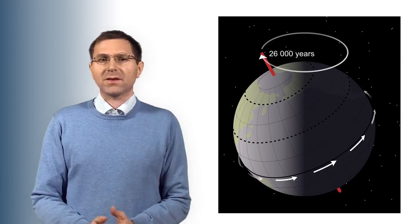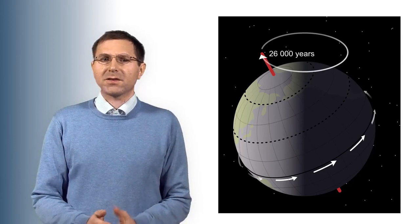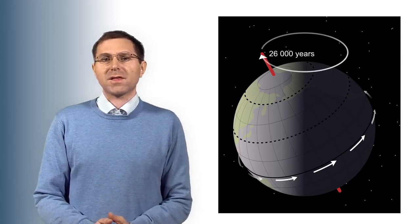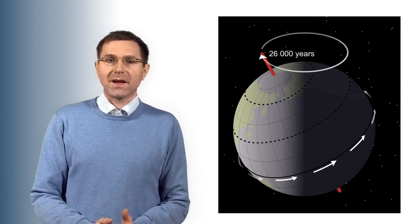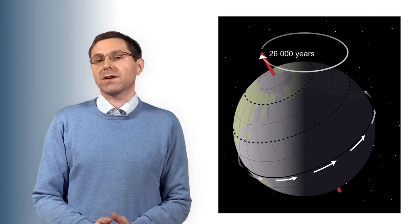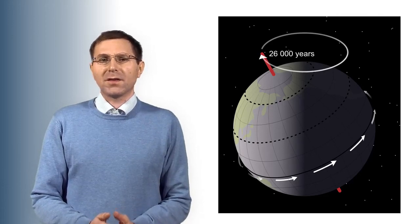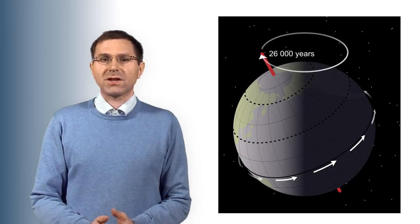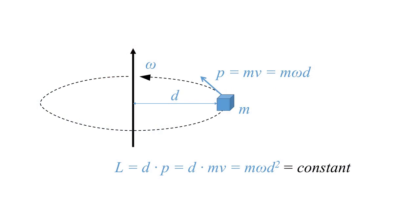This effect is called precession. It takes about 26,000 years until the rotation axis has completed one full cycle. But there are also other effects that change the rotational behavior of our planet.